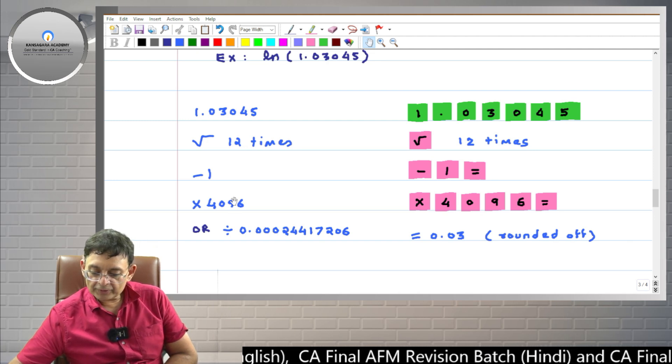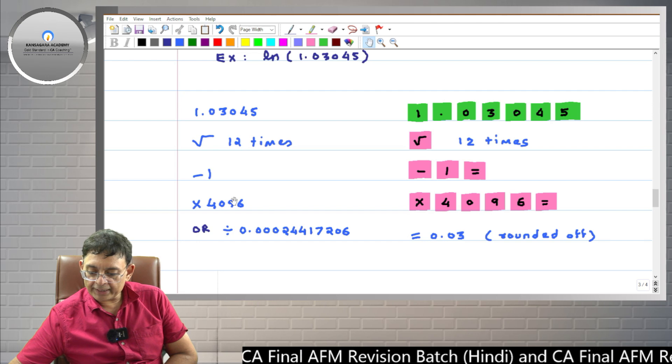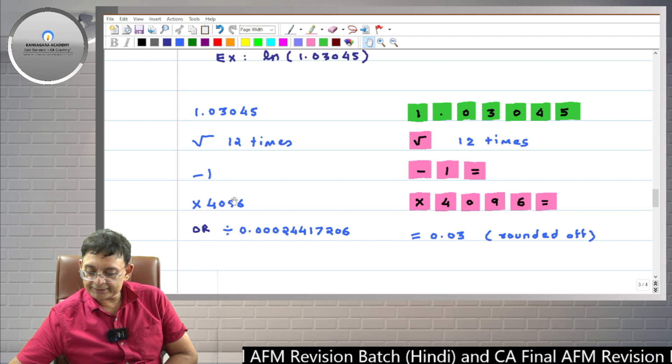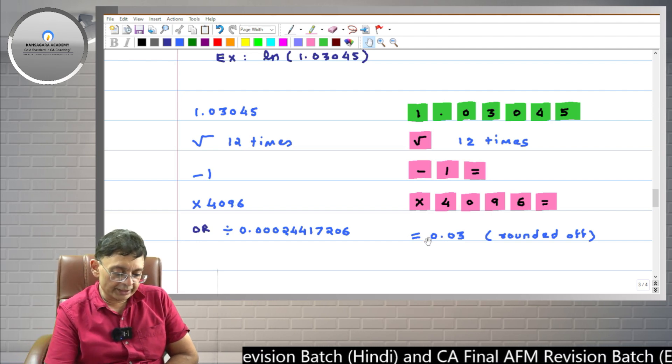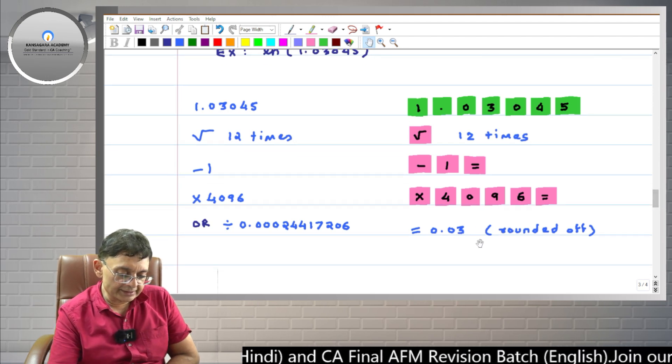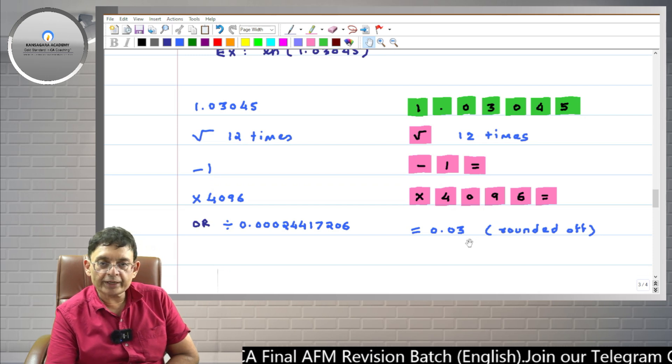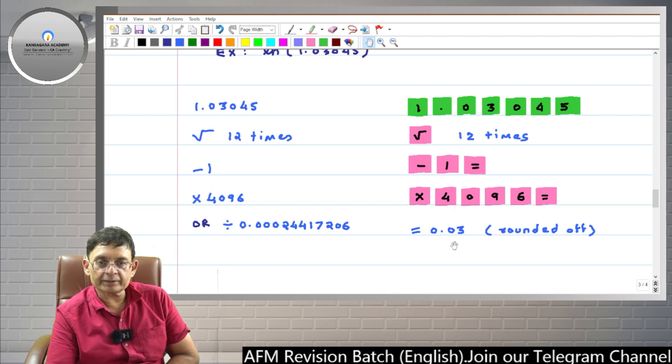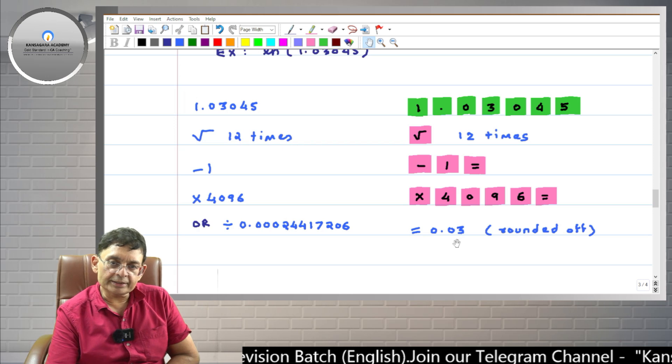So friends, I am seeing 0.0299956636. So if you round off, you will get 0.03. This is the answer. Friends, remember that this is an approximate answer. The answer which you get here is not mathematically 100% precise. But this is enough for you.